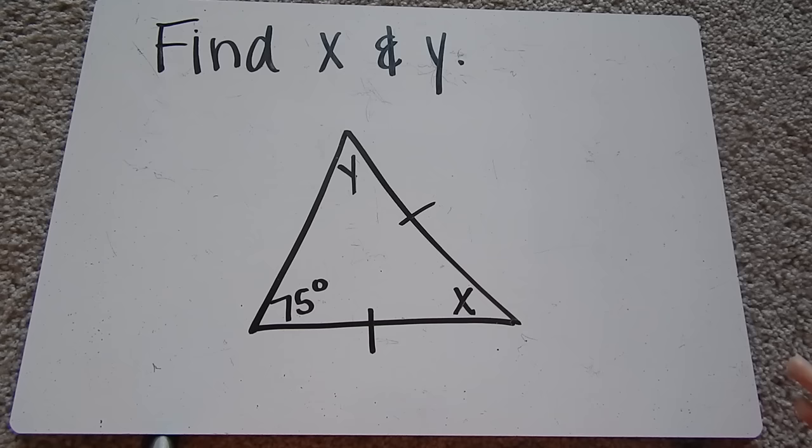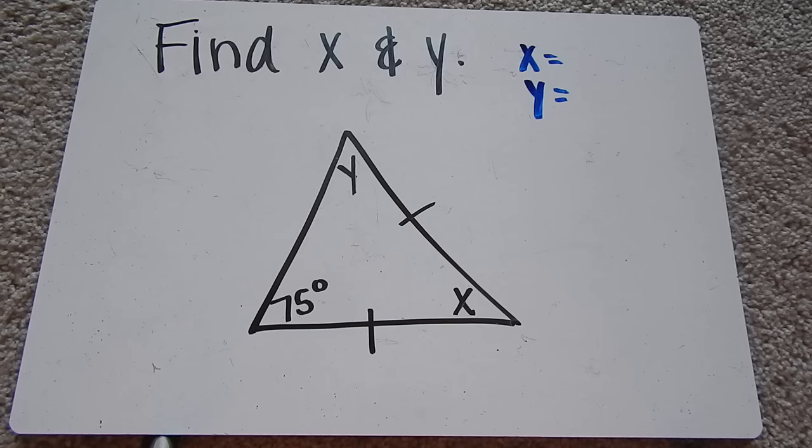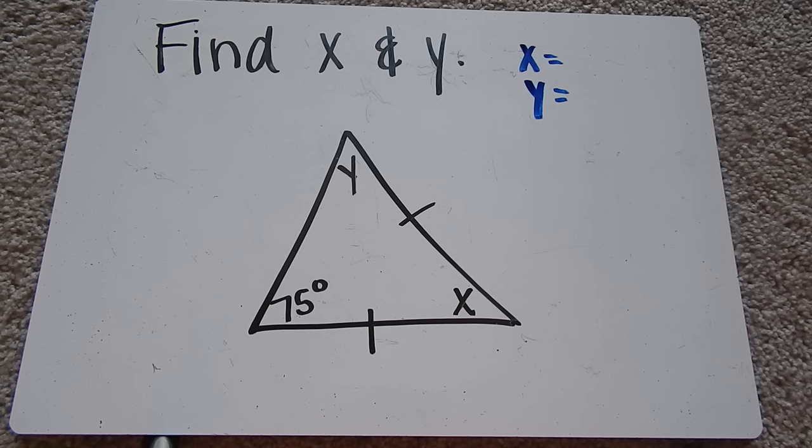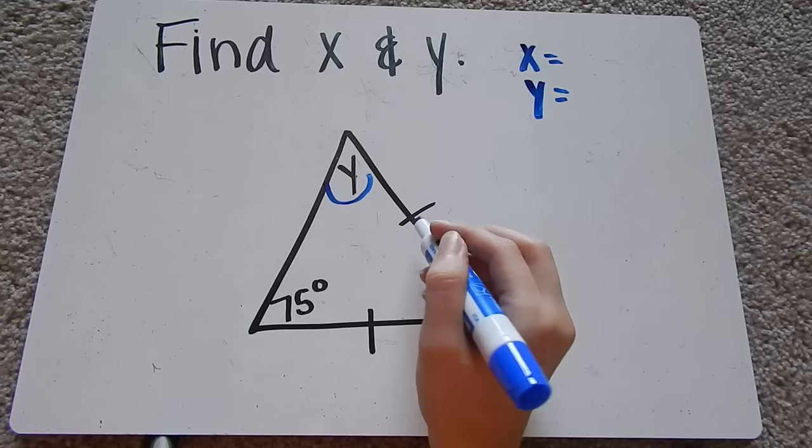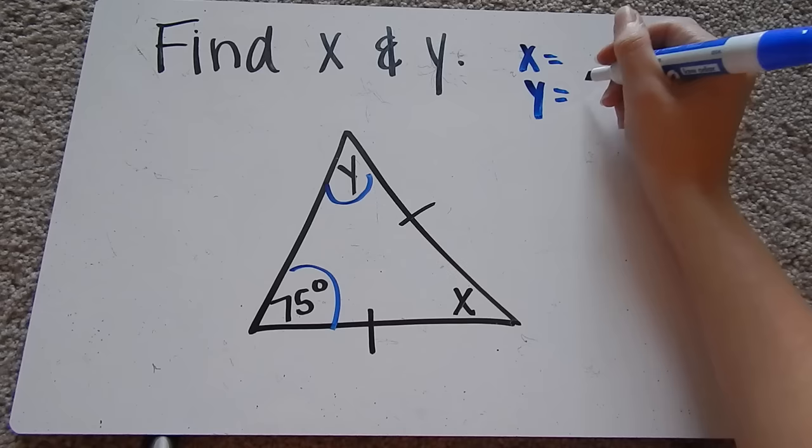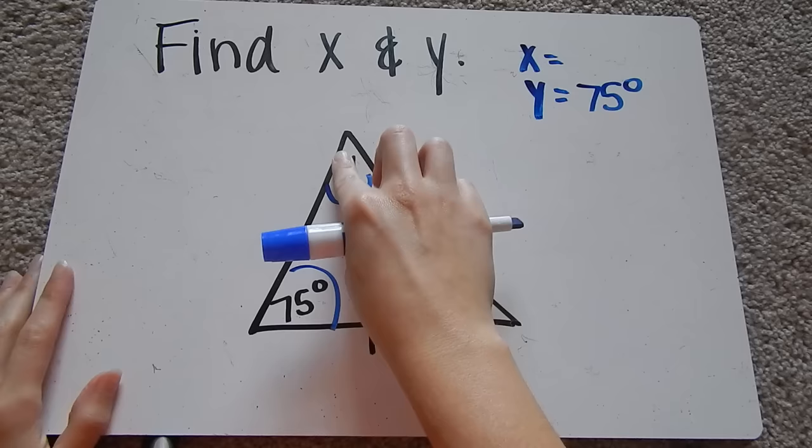So let's move on to some examples. The first one says find x and y. If you notice, we have a triangle with two equal sides. This is an isosceles triangle. So when we have two congruent sides, the angles opposite of the sides will be congruent. Well, I already know one of the angles is 75. The other angle must be 75, so y is equal to 75. That was easy enough.